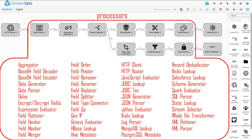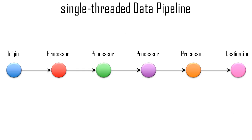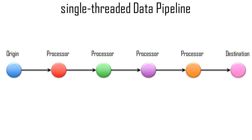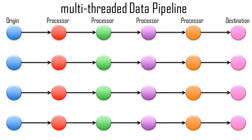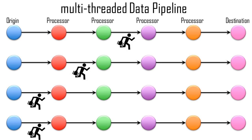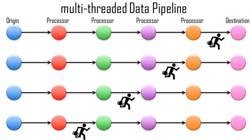In a standard single-threaded data pipeline, an origin creates a batch of records and runs it through the pipeline. The default batch size is 1,000 records, and a new batch is created only after the previous batch has fully processed and reached the destination. Some origins can generate multiple threads to enable parallel processing. For a multi-threaded data pipeline, StreamSets creates more than one pipeline runner, where each thread connects to the origin system, creates a batch of records, and passes the batch to an available runner.